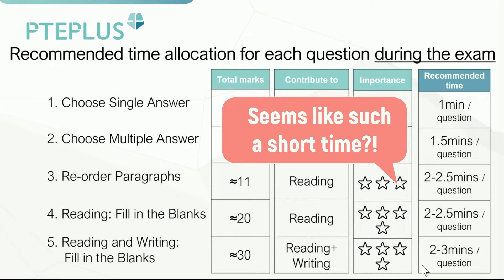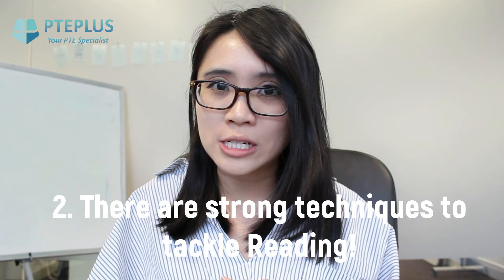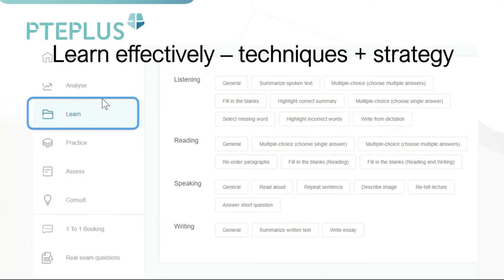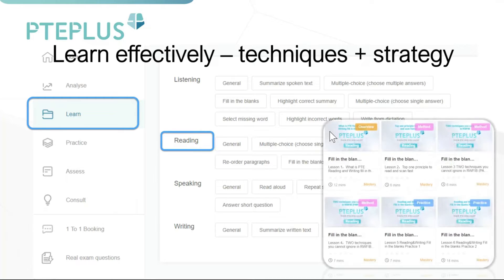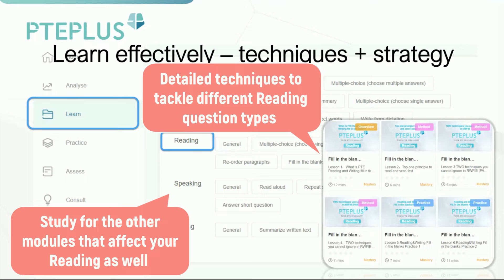Some students may feel worried because these time limits seem short for reading and answering. To an extent, the reading section does require a stronger base in English — you either know a word and its meaning or you don't, which can be a big challenge. However, there are still many techniques you can use to make it easier, and they are all in the learn section of your all-in-one course under reading. Every question type has its own detailed lessons covering strategies and techniques to tackle each one. Remember that other modules like speaking read aloud also contribute to your reading score, so study those lessons too.